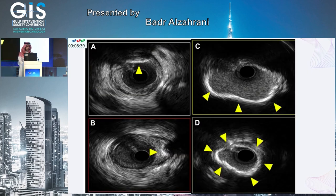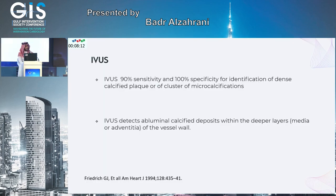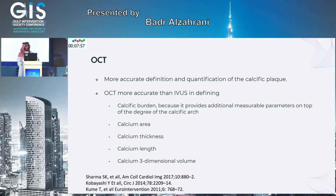IVUS images show calcified lesions including 180-degree and concentric calcification easily missed by coronary angiogram. OCT measures the area of calcified nodule, length, and arc. IVUS has 90% sensitivity and 100% specificity for calcified plaque and detects deep calcium layers better than OCT. OCT offers more accurate definition and quantification — including calcium area, thickness, length, and 3D volume.